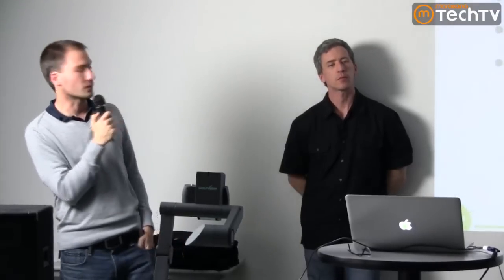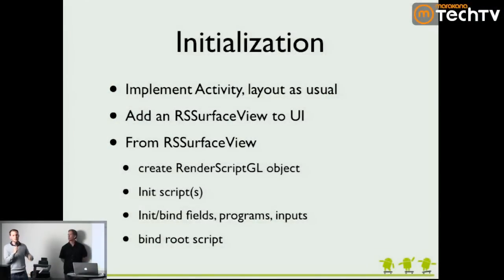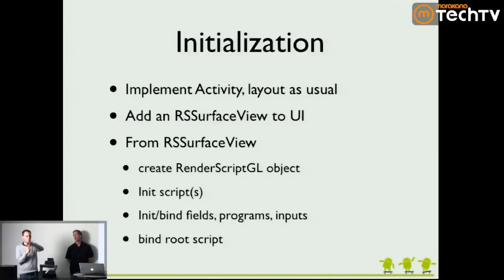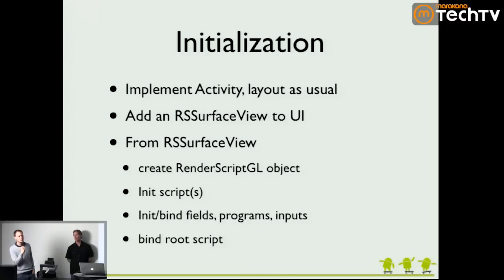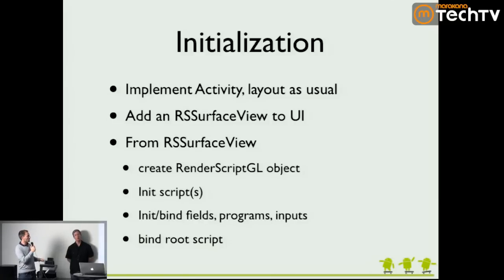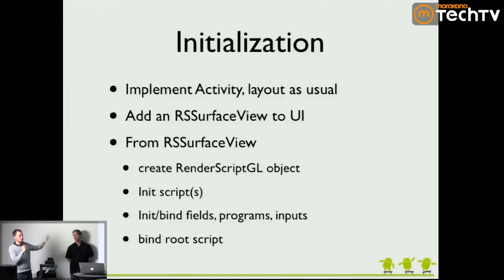The way you use RenderScript in your application: there are really two ways. For the most common one — actual rendering — you create a regular activity with your layout, buttons, and all that stuff. For instance, in the Books application the page turning was RenderScript, but there was still a menu created using the standard UI toolkit. To use RenderScript in the UI, you use something called the RSSurfaceView — just a subclass of SurfaceView used to render OpenGL. From that RSSurfaceView you can get a RenderScriptGL object, which is able to do rendering. If you don't care about rendering, you can just use a RenderScript object and don't need a surface view.